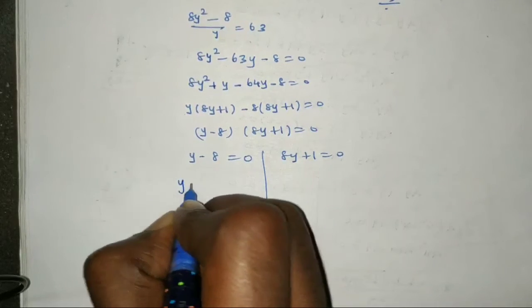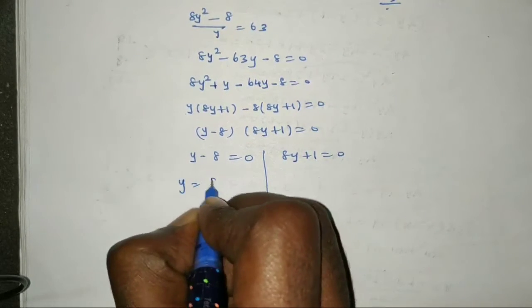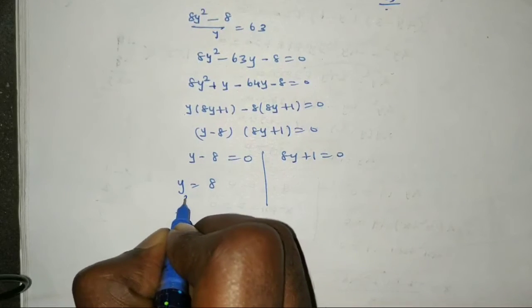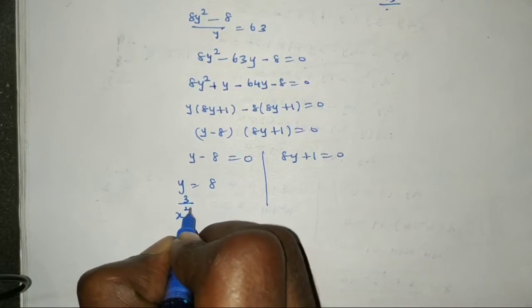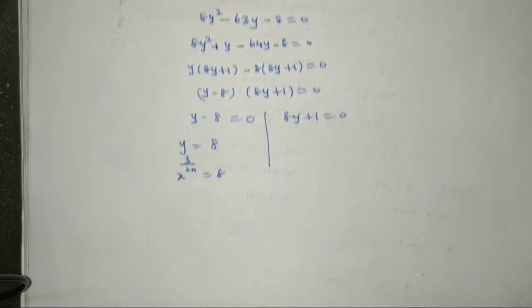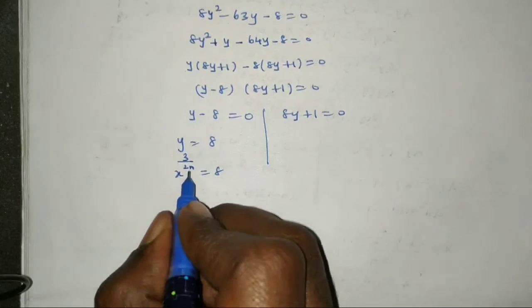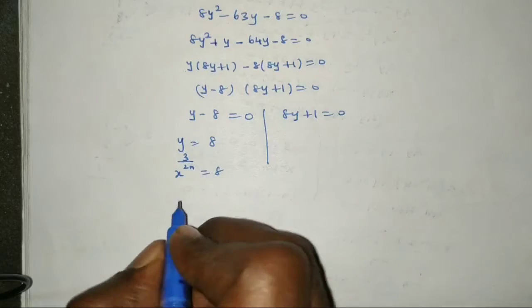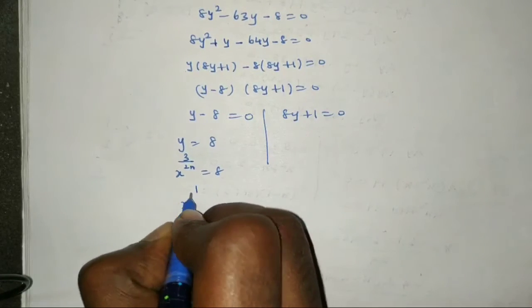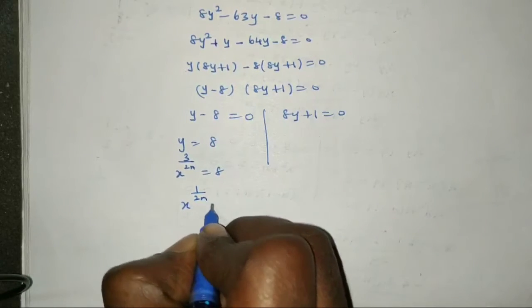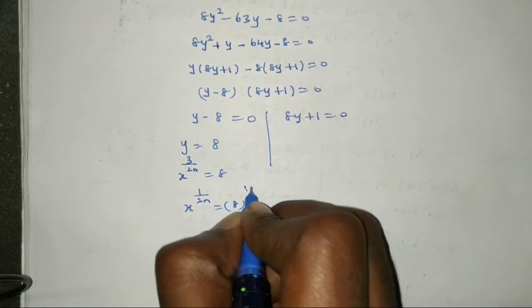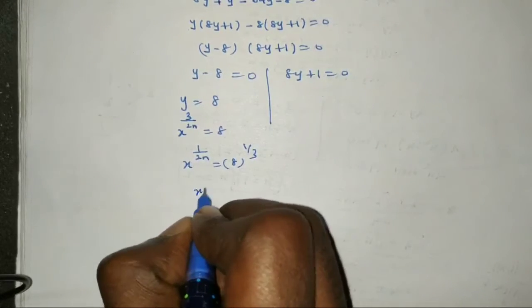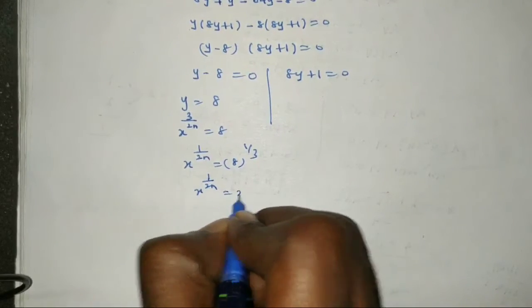So y is equal to 8 or y is equal to minus 1/8. Taking the first case: y equal to 8, so x^(3/2n) equal to 8. Therefore x^(1/2n) equal to 2.